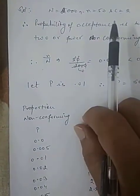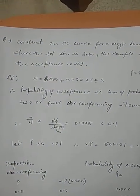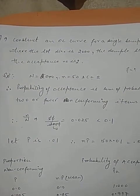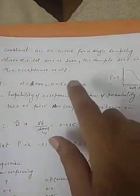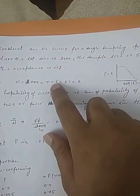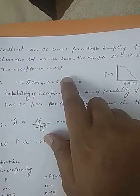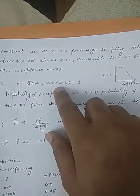The probability of acceptance is the sum of probability of obtaining two or fewer non-conforming items in the sample. The proportion defective p is not given, so we will assume it. Basically to solve this numerical we have two methods: binomial distribution and Poisson distribution. Binomial distribution we generally use when n value is up to 10.